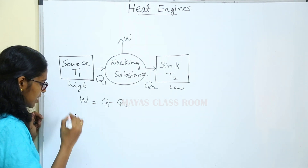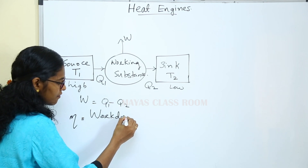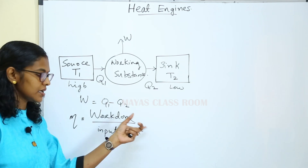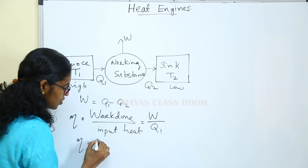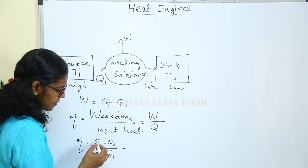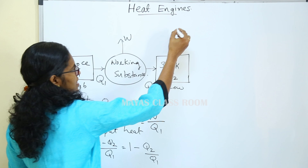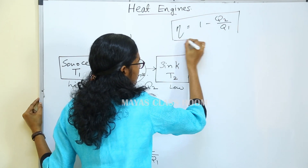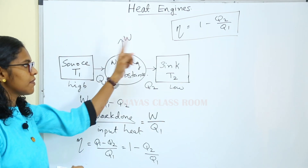Efficiency is represented by eta. The efficiency of a heat engine is the ratio of the work done to the input heat Q1. Therefore, efficiency eta is equal to Q1 minus Q2 divided by Q1. Splitting this, eta is equal to 1 minus Q2 divided by Q1. That is the efficiency of a heat engine.